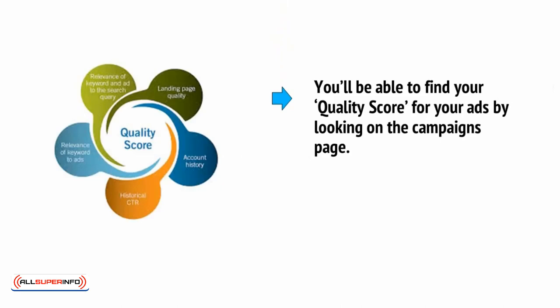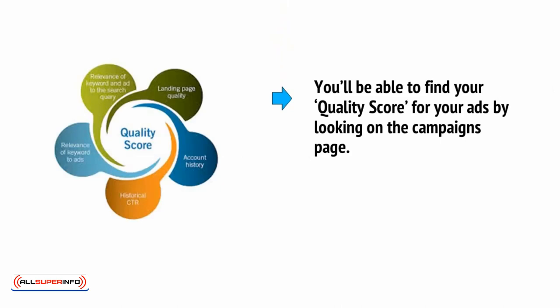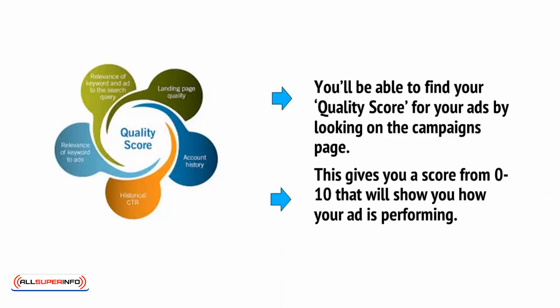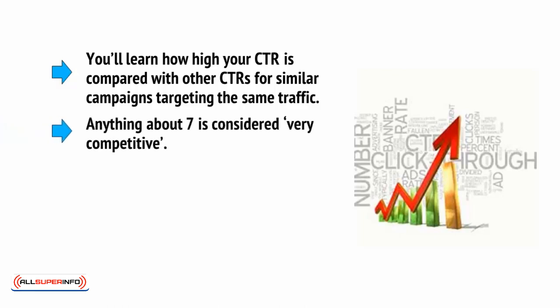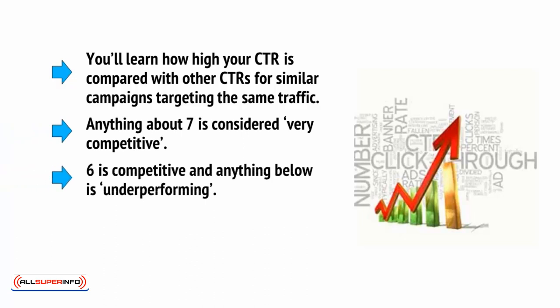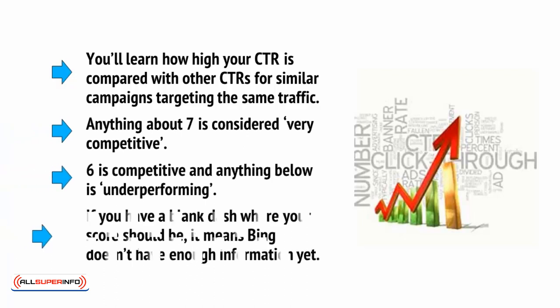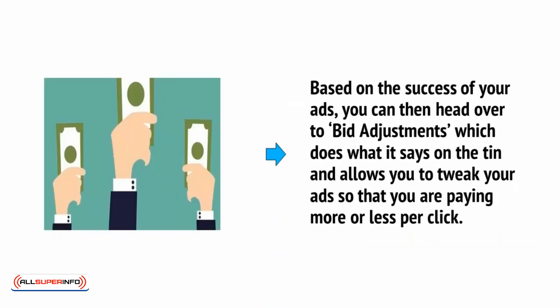For example, you'll be able to find your quality score for your ads by looking on the campaigns page. This gives you a score from 0 to 10 that will show how your ad is performing — specifically, how high your CTR is compared with other CTRs for similar campaigns targeting the same traffic. Anything above 7 is considered very competitive, 6 is competitive, and anything below is underperforming. If you have a blank dash where your score should be, it means Bing doesn't have enough information yet. Based on the success of your ads, you can then head over to Bid Adjustments, which allows you to tweak your ads so that you'll pay more or less per click.